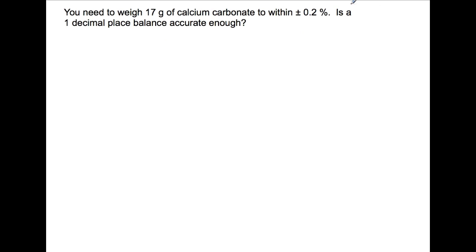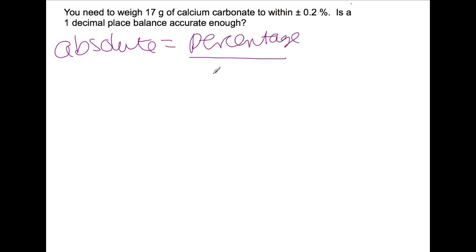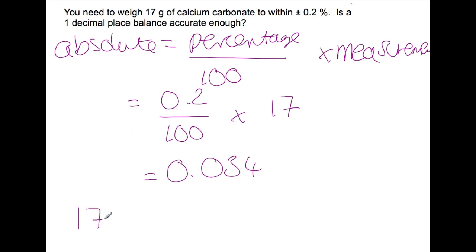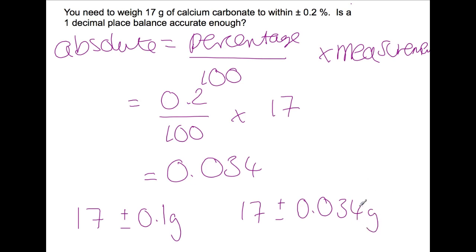Here we've been given a mass of calcium carbonate to weigh out and a percentage within which we need to be accurate — we need to calculate the absolute uncertainty associated with this percentage. The absolute uncertainty is the percentage divided by 100 multiplied by the measurement: 0.2% divided by 100 multiplied by 17 grams gives an absolute uncertainty of 0.034 grams. A one decimal place balance would measure to 17 plus or minus 0.1 grams, but we need 17 plus or minus 0.034 grams, which is more accurate. Therefore a one decimal place balance would not be suitable.